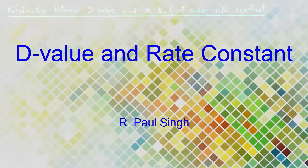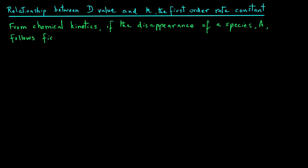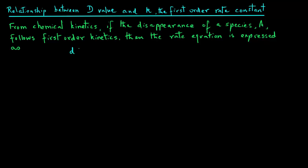Let's look at the relationship between D value and the first-order rate constant K. From chemical kinetics, if the disappearance of a species A follows first-order kinetics, then the rate equation is expressed as dA over dt equals minus K times A, where A is the concentration, T is the time, and K is the first-order rate constant.